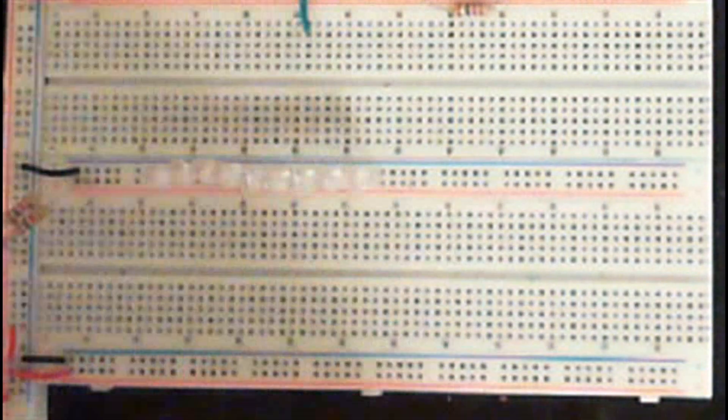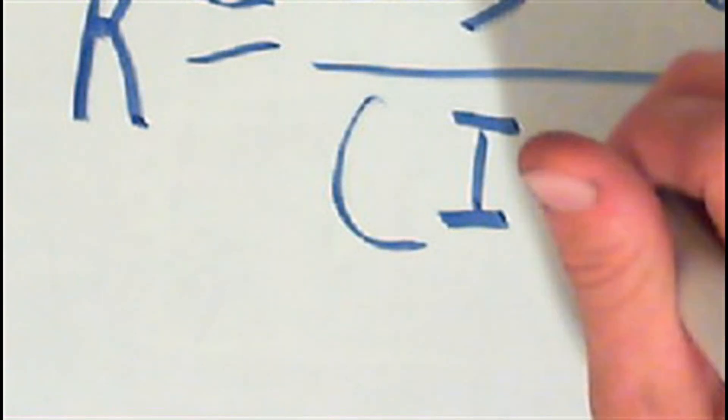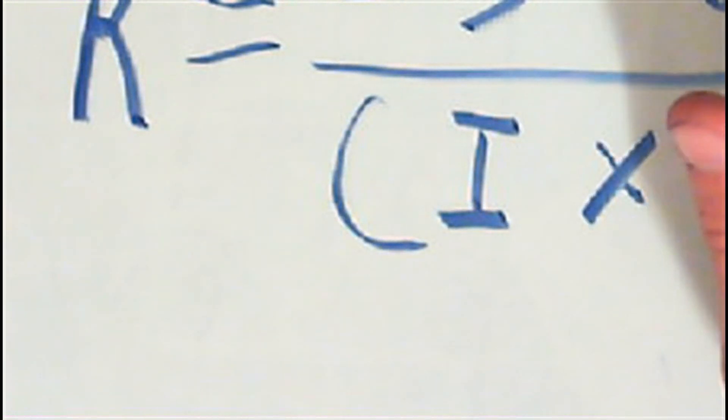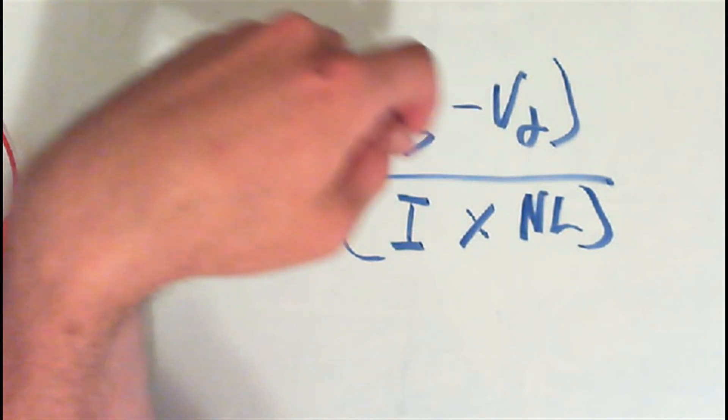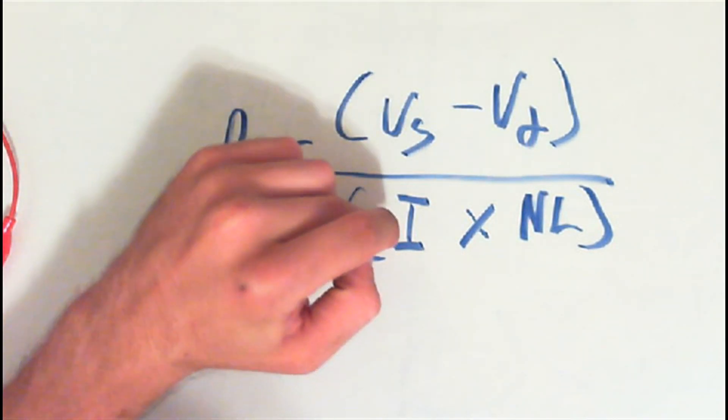So I hope this clears everything up for solving for the resistor values needed for LEDs. Again, let's sum all this up. The formula would be this. The resistor value would equal V source subtract V drop divided by, alright, just open that up, the current dropper used times the number of LEDs. And we'll just put NL number of LEDs. So that right there would be the formula you would need to use. And it's V source subtract V drop divided by the current used by each LED times the number of LEDs.